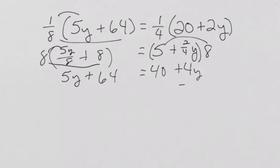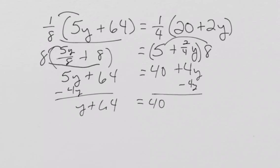Then, I'm going to subtract four y from both sides. And I get y plus 64 equals 40. Subtract 64 from both sides. And I get y equals negative 24.